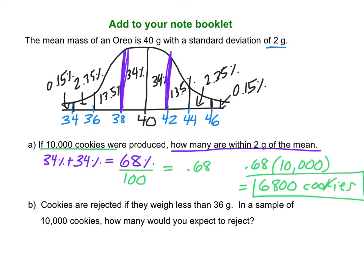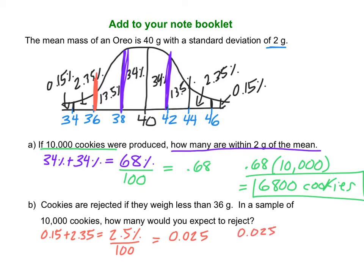Cookies are rejected if they weigh less than 36 grams. In a sample of 10,000 cookies, how many would you expect to reject? Find 36 grams on the curve — less than 36 grams covers 0.15% plus 2.35%, which equals 2.5% of the cookies. Convert 2.5% to a decimal: 2.5 divided by 100 is 0.025. Take 0.025 times 10,000, which gives an answer of 250 cookies.